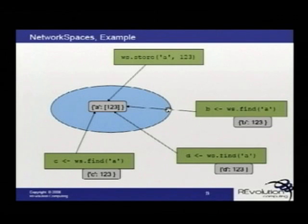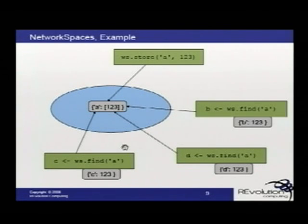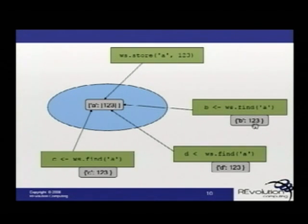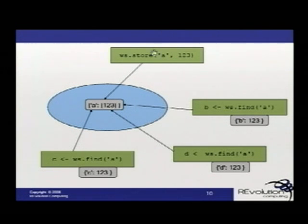If a client wants to store values 1, 2, and 3 associated with A, they go into the workspace. Any other client that can connect to the workspace can then retrieve those values by doing a find. If all three clients had wanted to request a find of A from the workspace but the value A had not yet been defined, they would just wait. And then once A was defined using the store mechanism, they would retrieve those values.